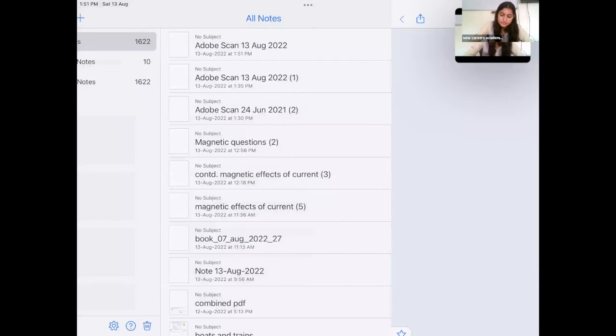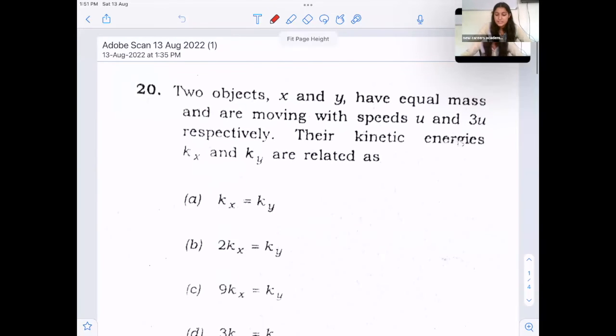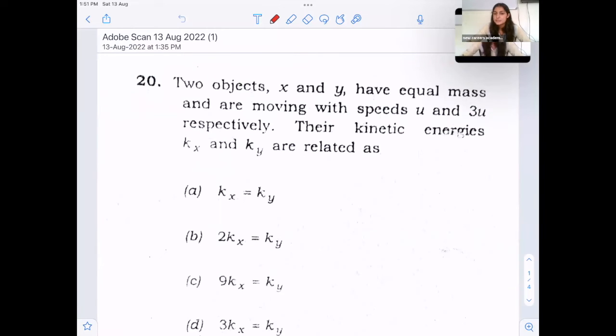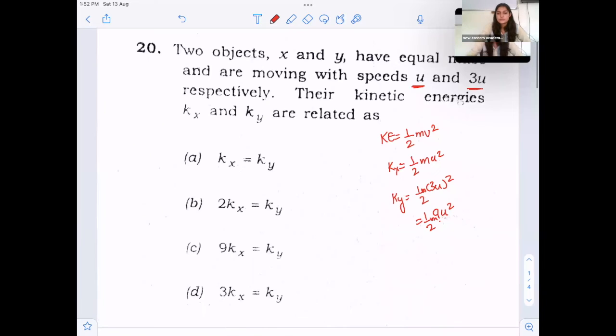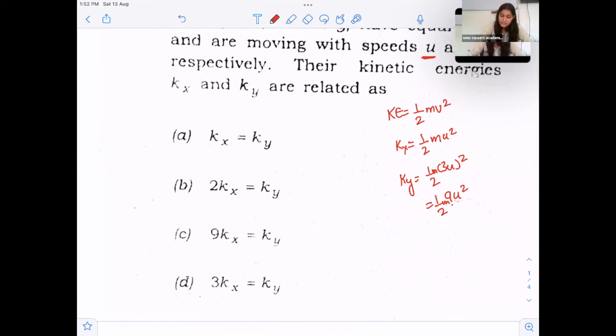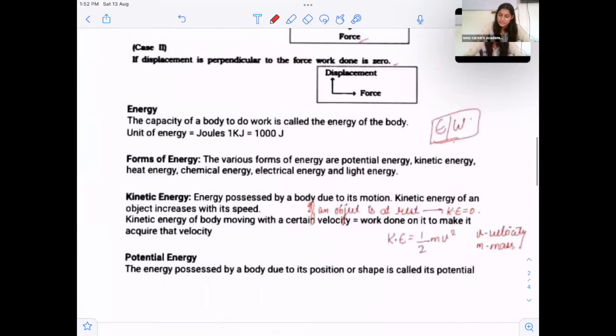Next question. Two objects x and y, they have equal masses and are moving with speed u and 3u respectively. Their kinetic energy Kx and Ky are related as. In this question, you need to know only a formula for kinetic energy. The formula for kinetic energy is half mv square. The kinetic energy of x is half m u square and kinetic energy of y is half m 3u square, which is 9/2 mu square. So, when you solve this, you will get an answer as 9 times kinetic energy of x is equal to kinetic energy of y.